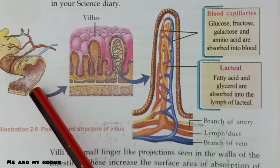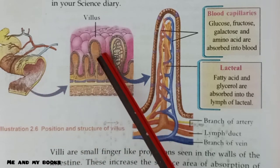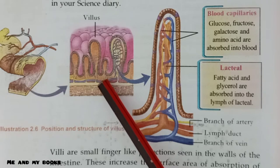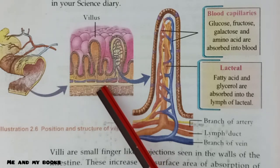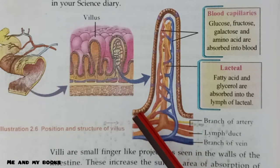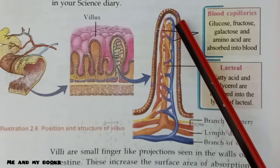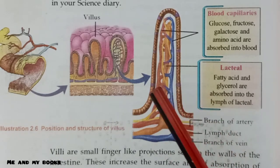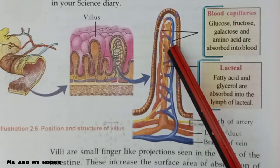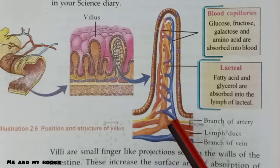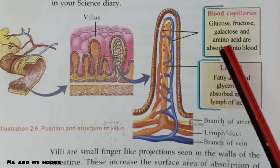The finger-like structures seen inside the small intestine are called villi, and their function is helping in absorption. Now let us study about the structure of a villi. The villi is lined by a single layer of cells. Inside the villi it has blood capillaries and also lacteals.